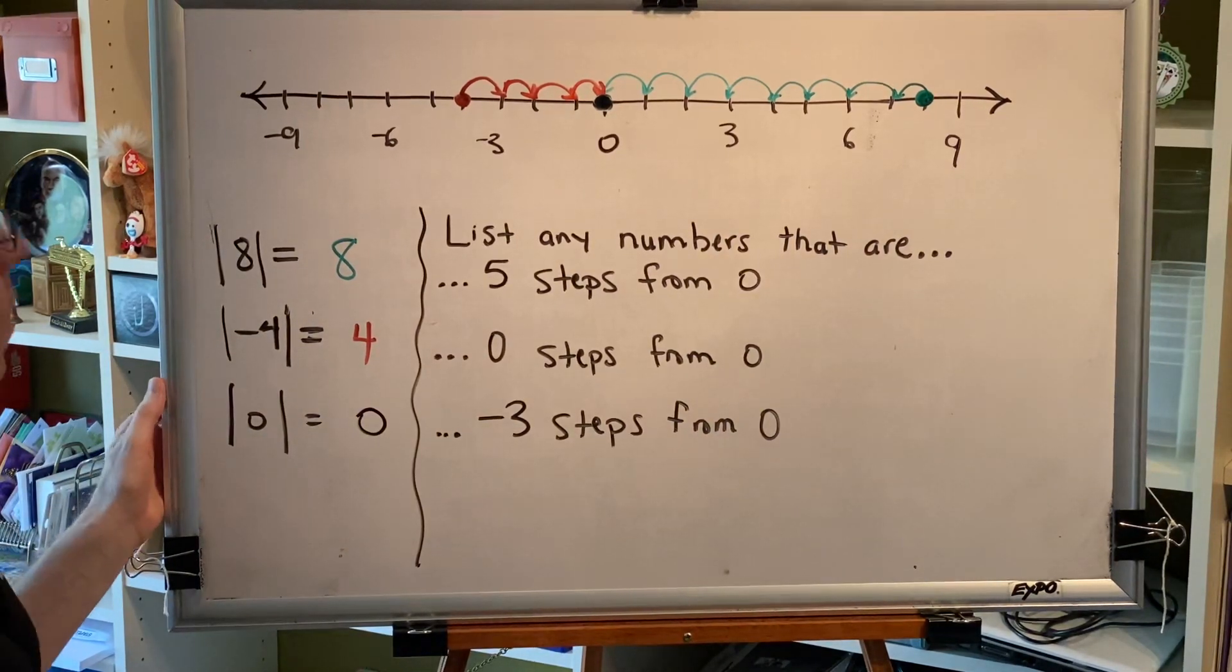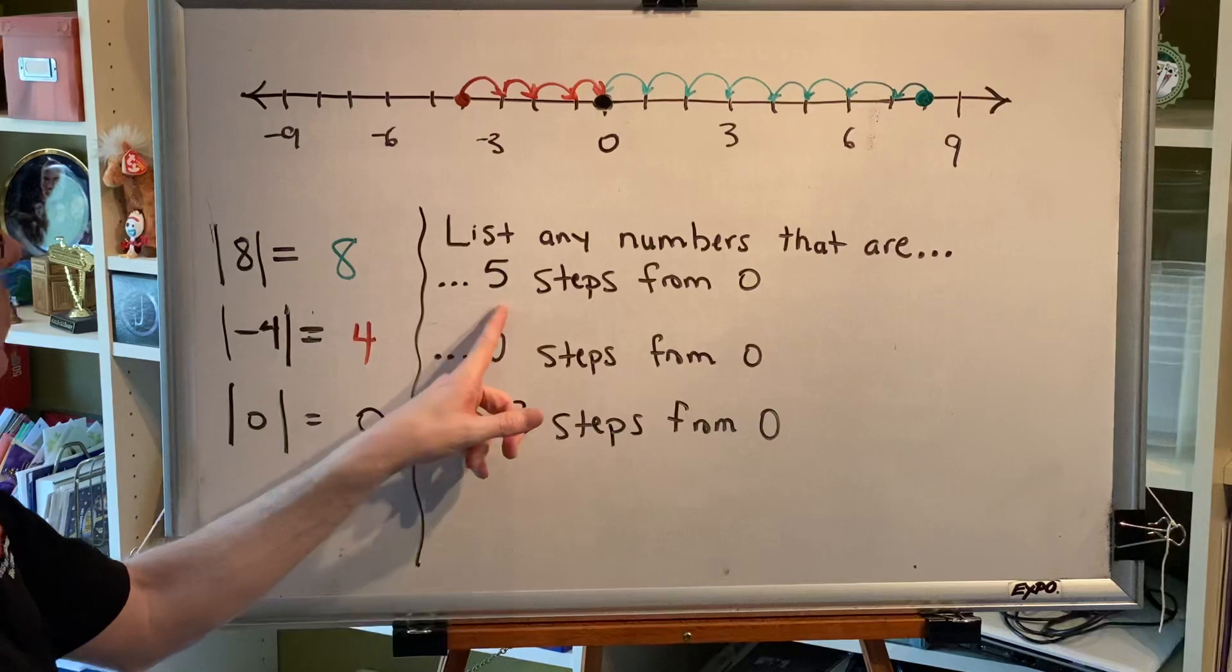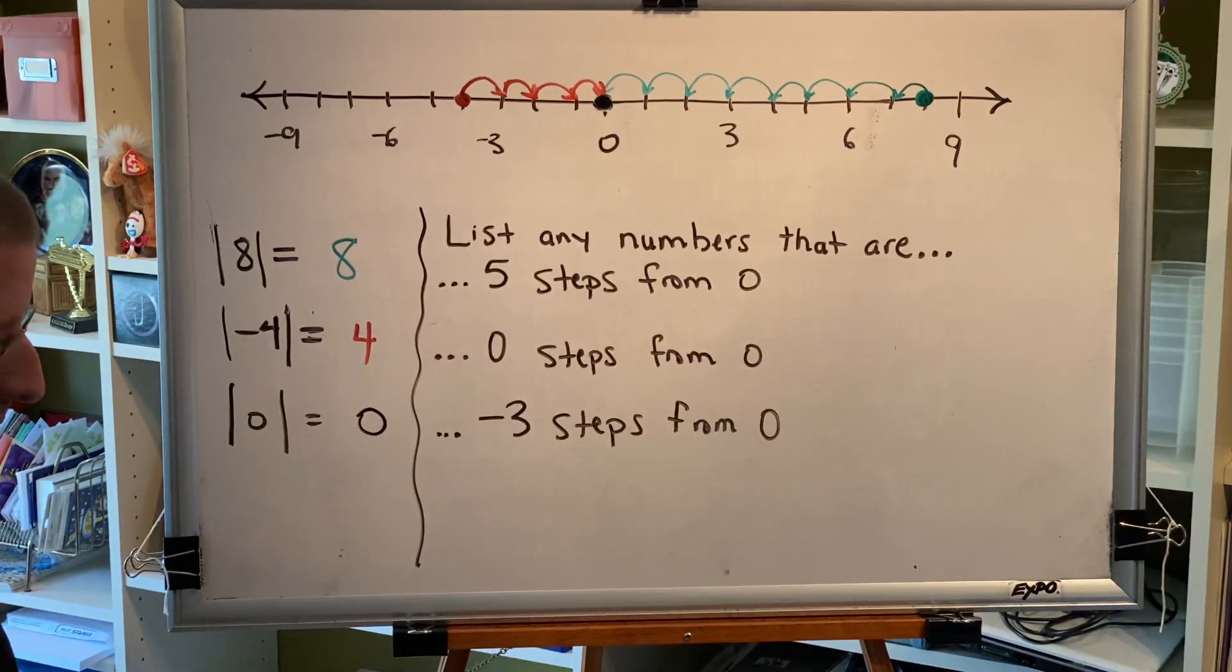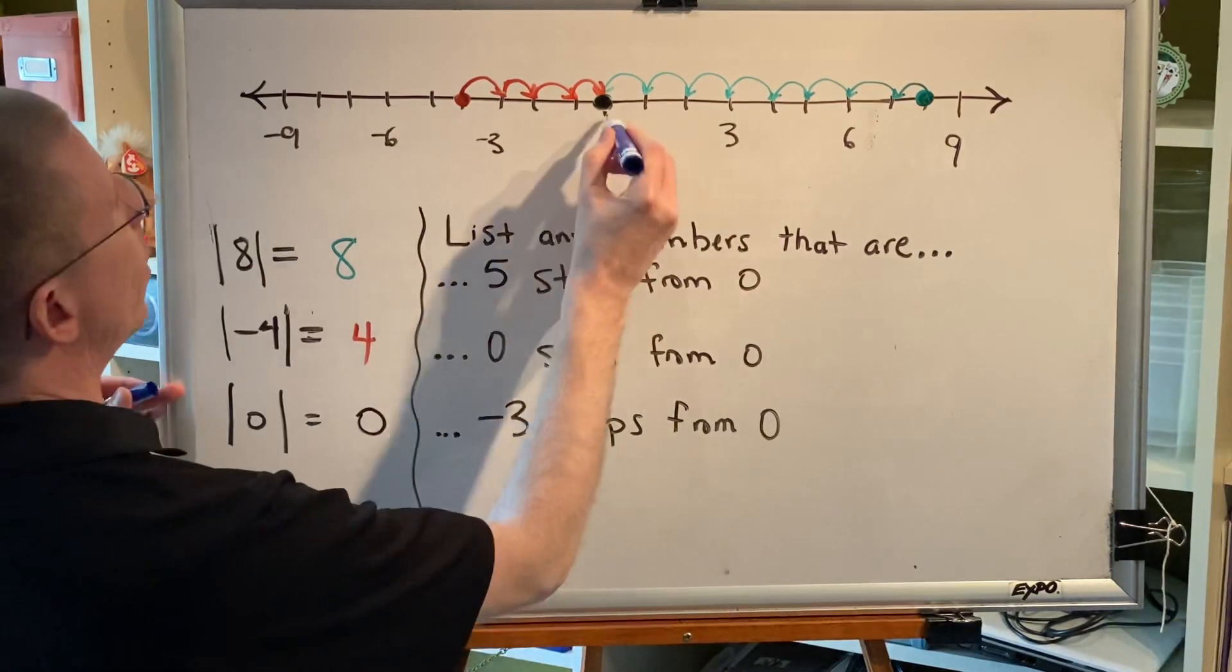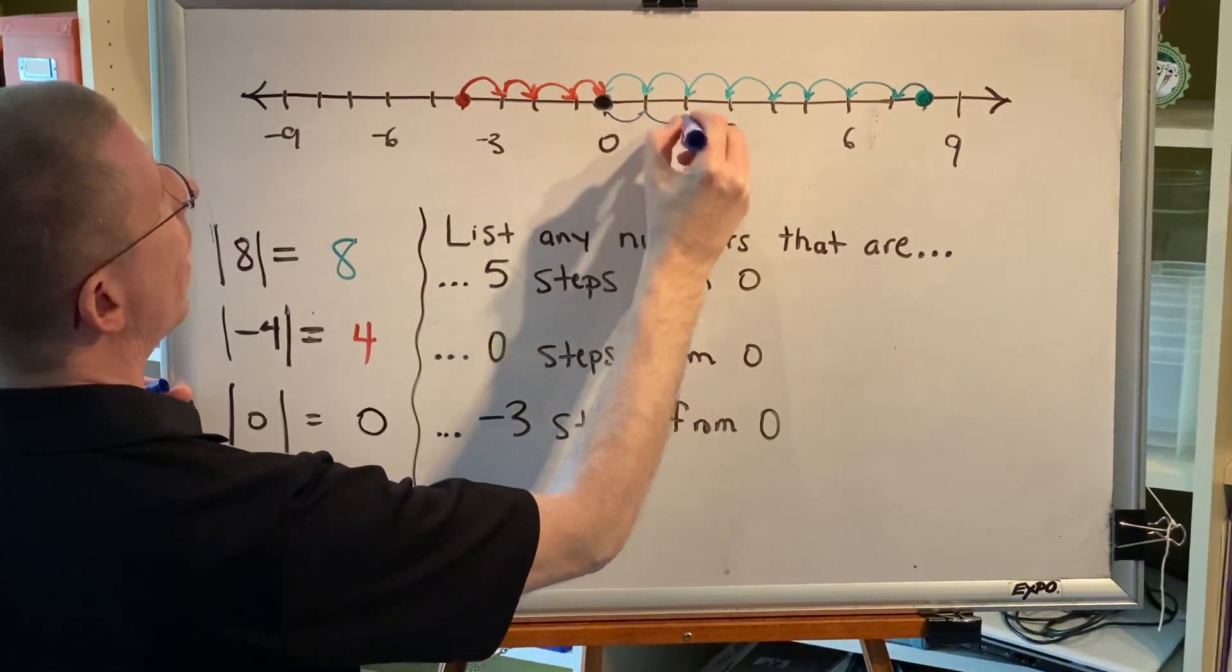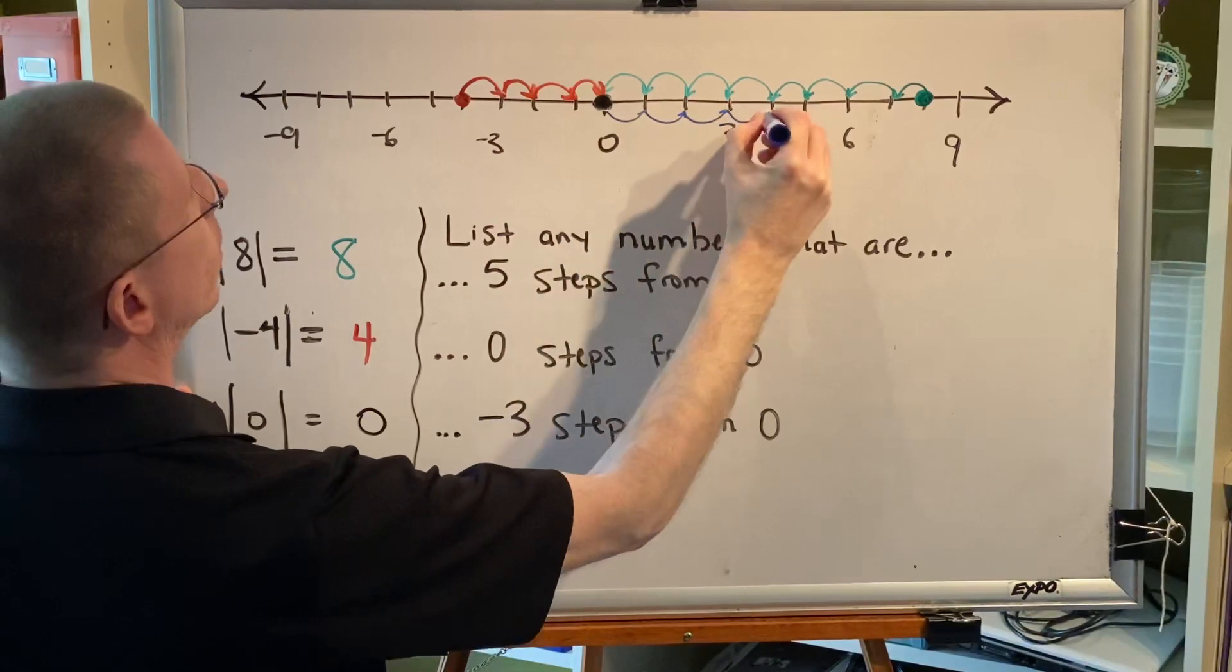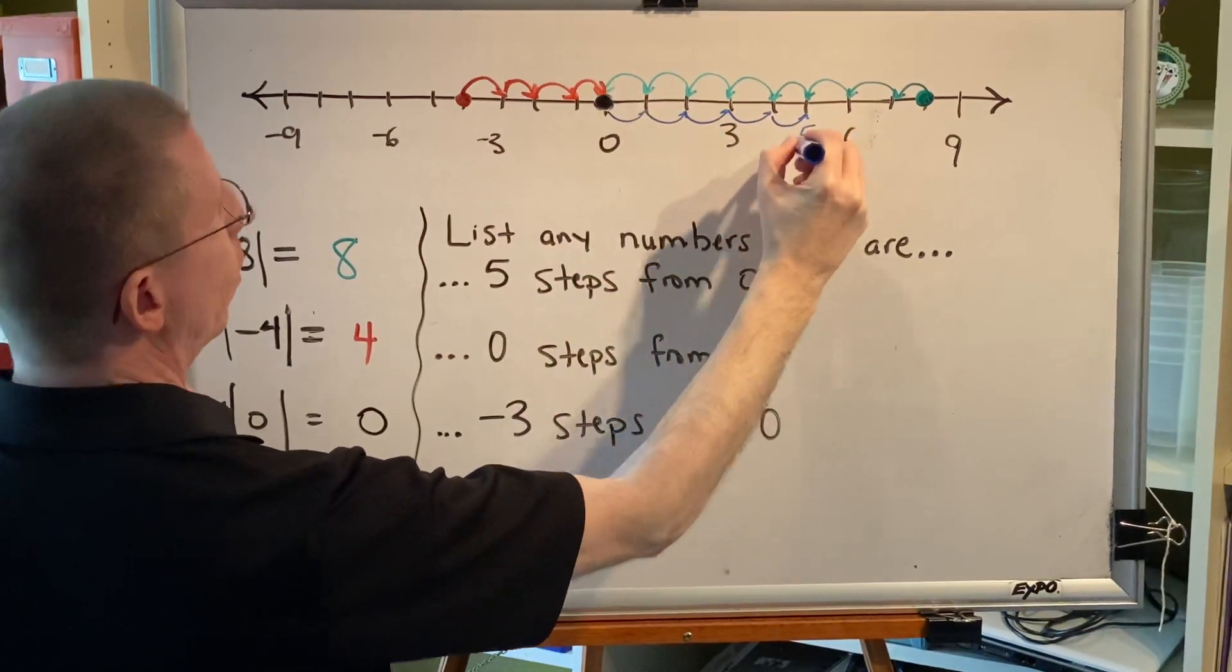All right, list any numbers that are five steps away from zero. Well, when we say five steps away, we mean in either direction. So, if you start at zero and you go five steps to the right, you end up with the number five.